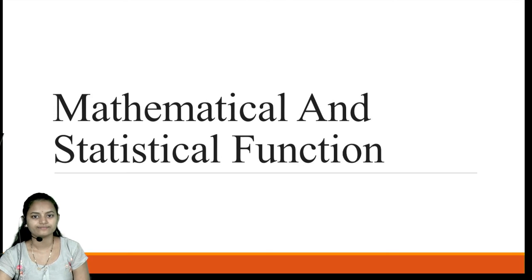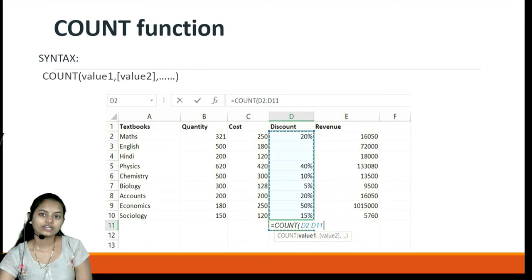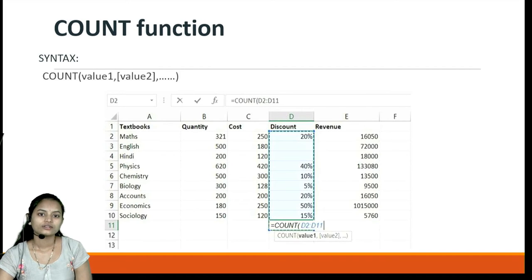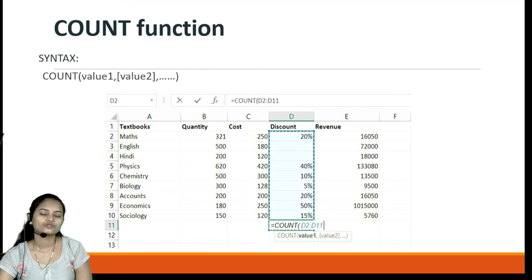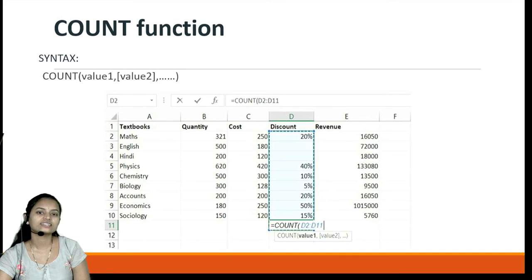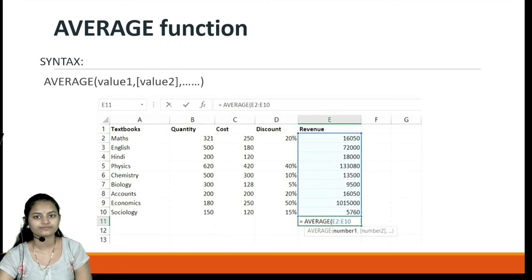Next we will see the mathematical and statistical functions used in Excel. The first is the COUNT function, which counts the number of values in a particular column or range. In the given example, it is used on column D. The syntax is COUNT followed by value1, value2, and so on, or we can select a range and it will count the number of items in that range.